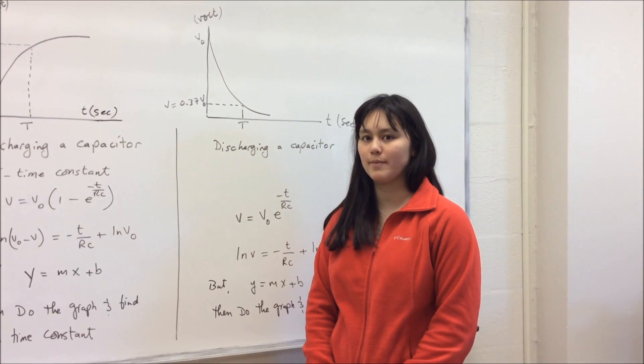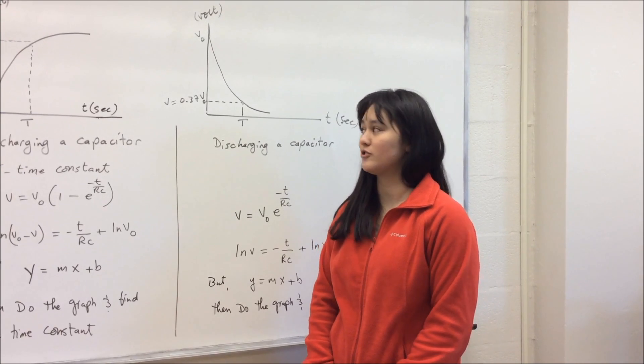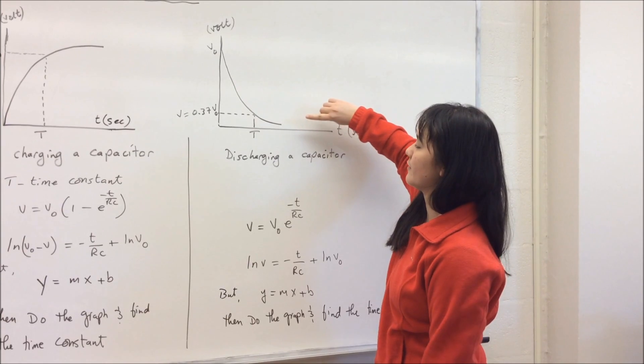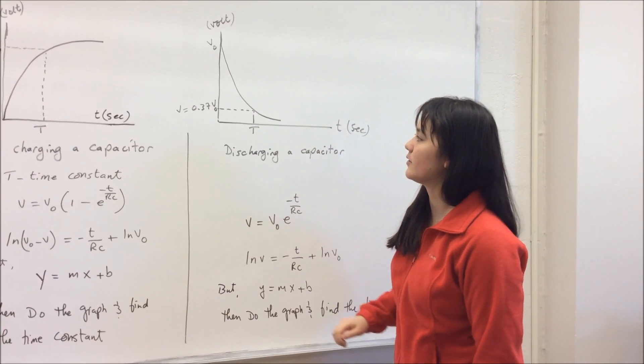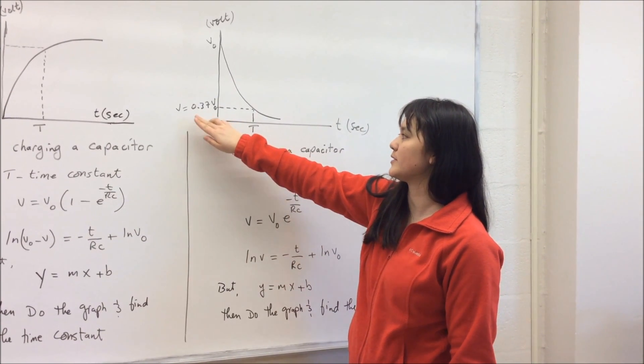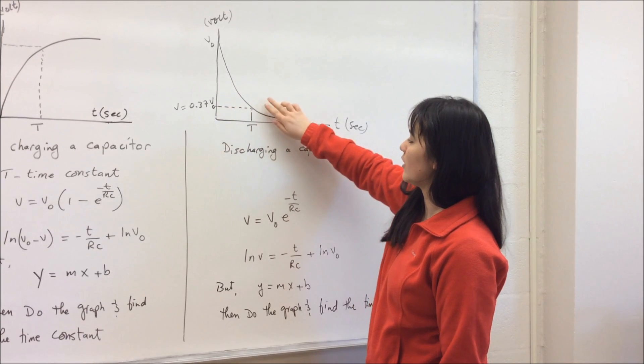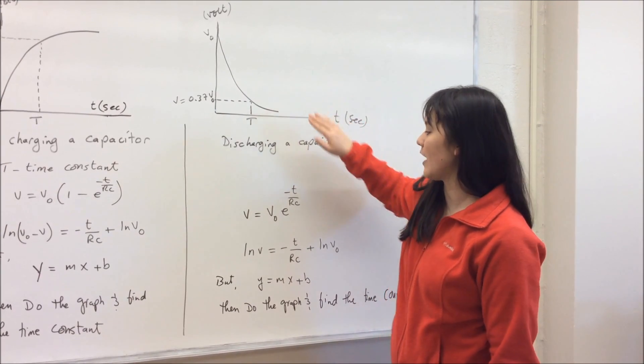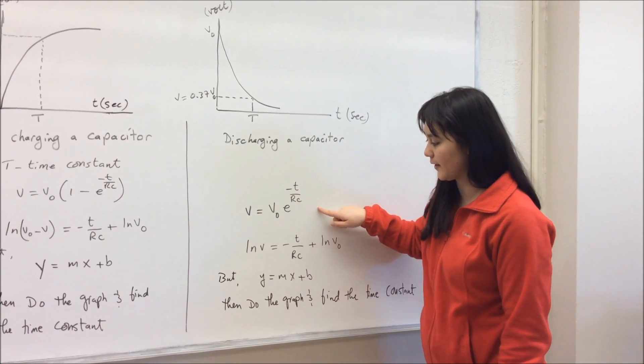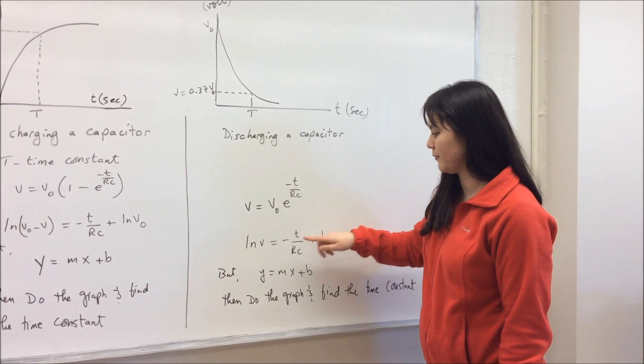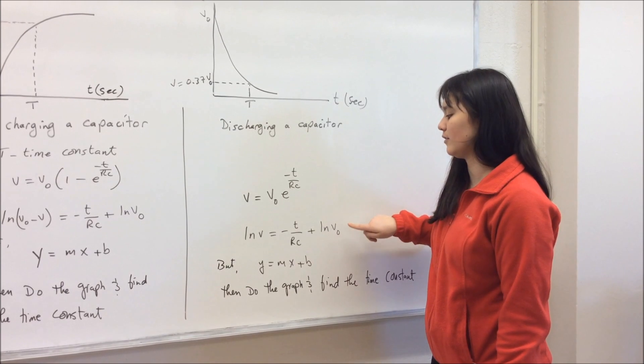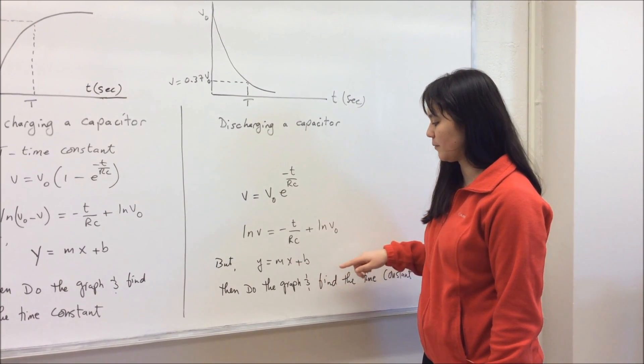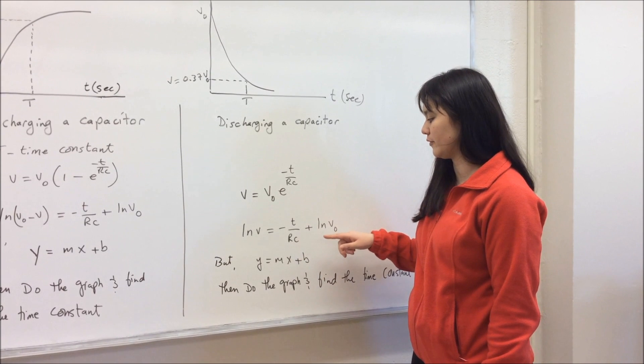After you charge the capacitor to its maximum, you want to discharge it. And discharging a capacitor, the graph looks like this, where the graph is exponential. And so if you take 37% of the voltage and you draw a line like this, then you can find the time constant. And this graph is represented by this equation here, which if you take the natural log of both sides, you get this, and this is also similar to the equation of a straight line, y equals mx plus b, where m the slope is 1 over RC.